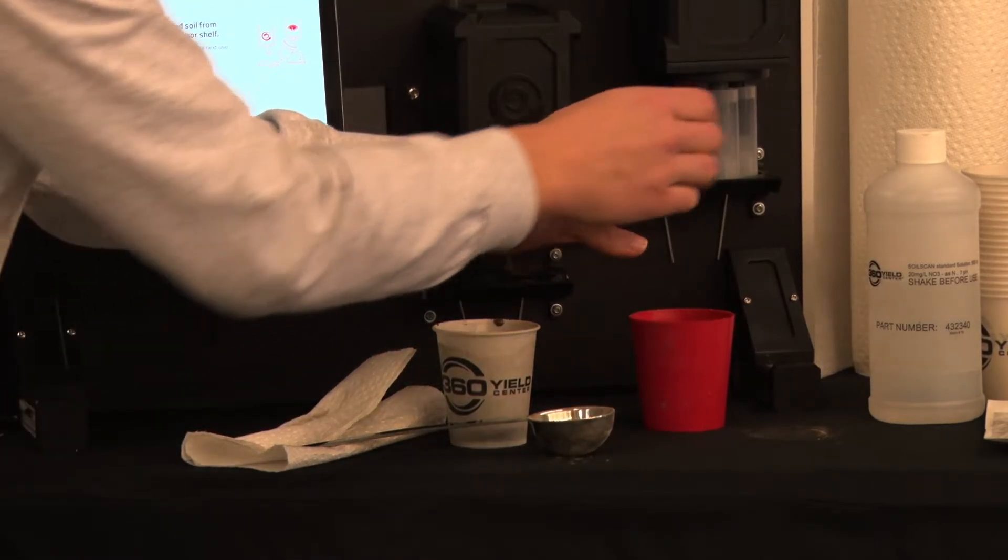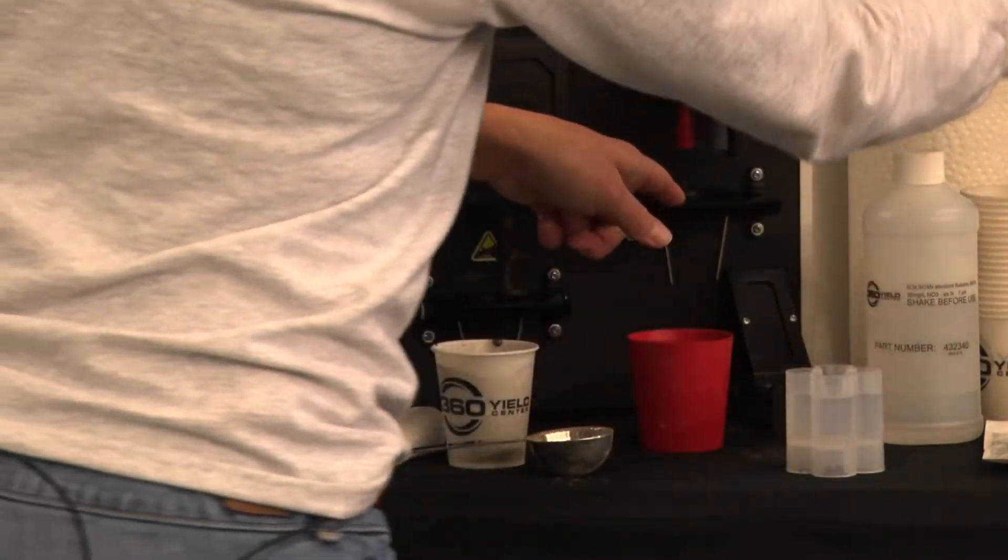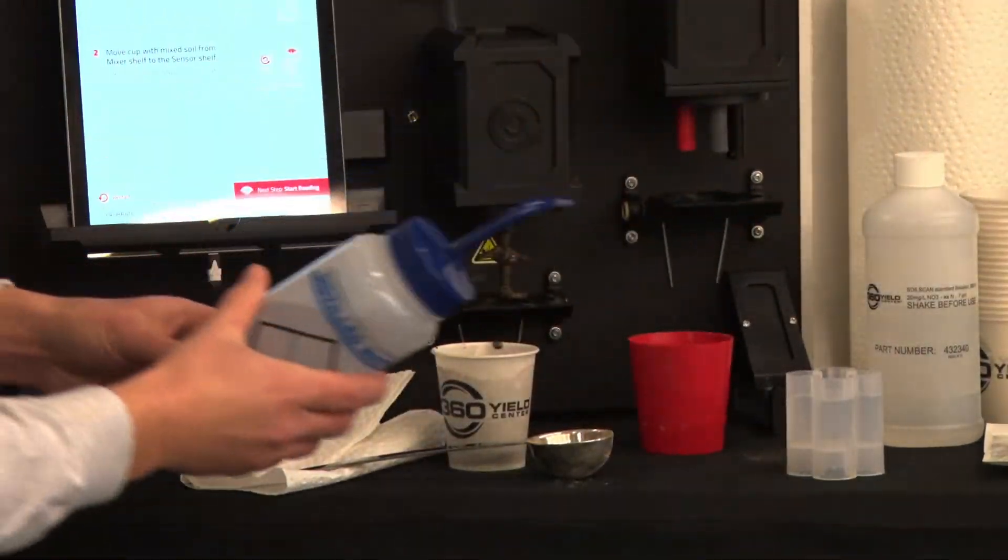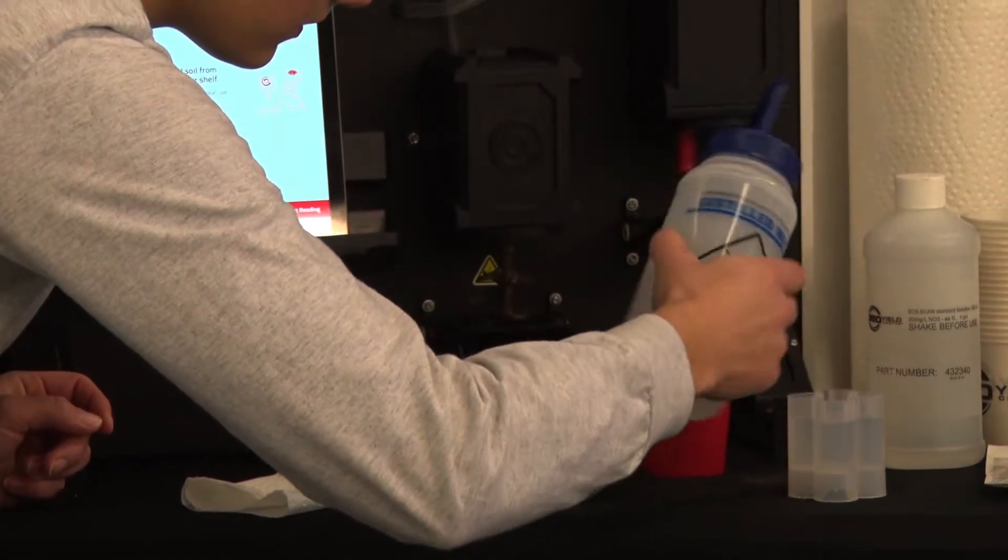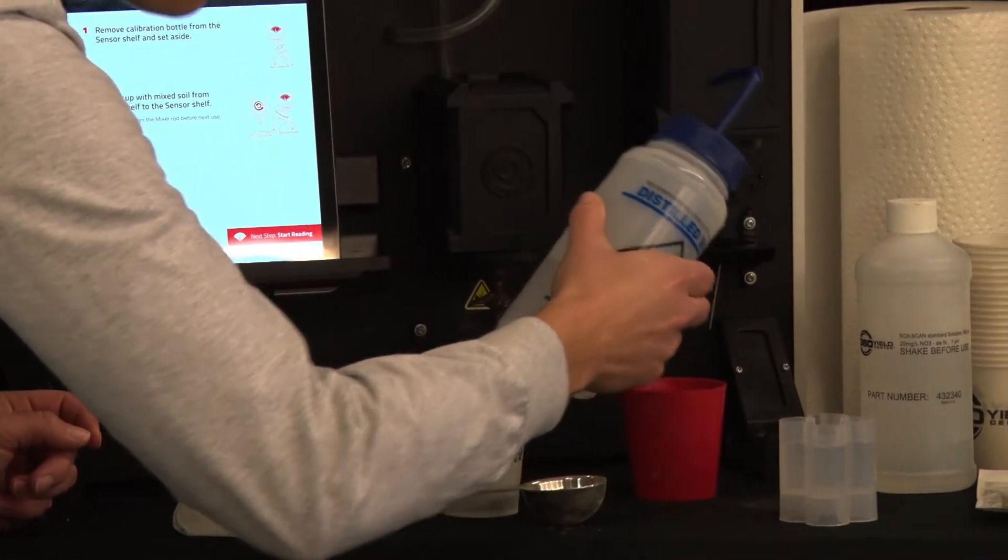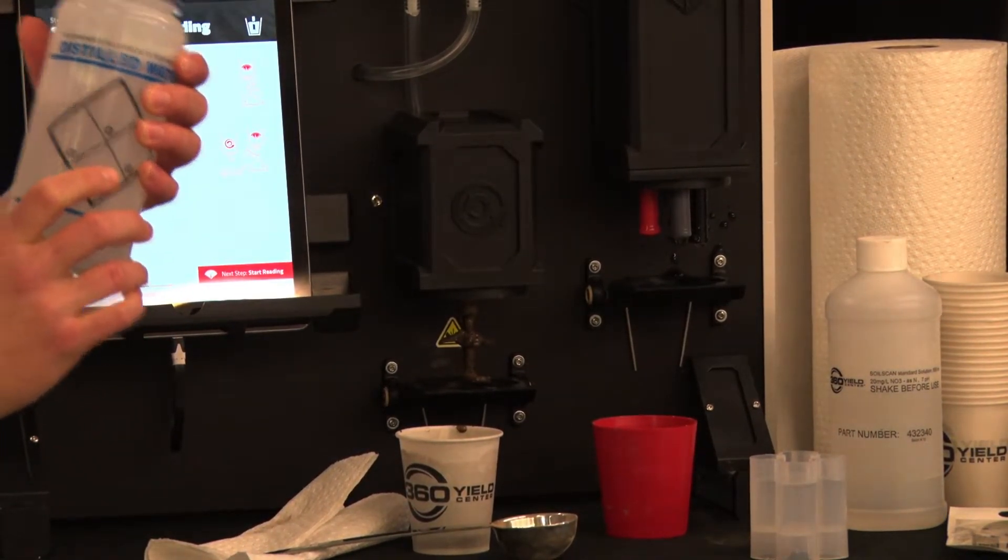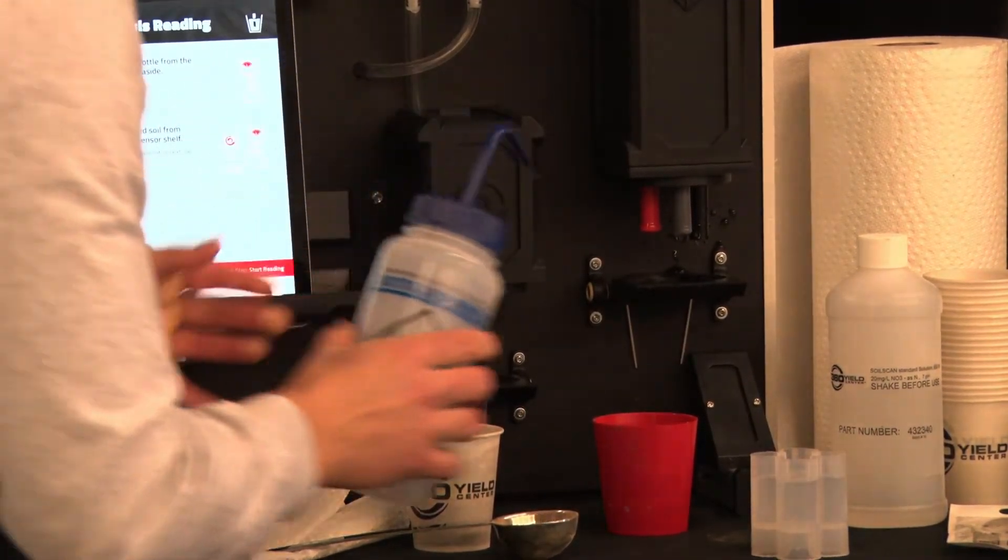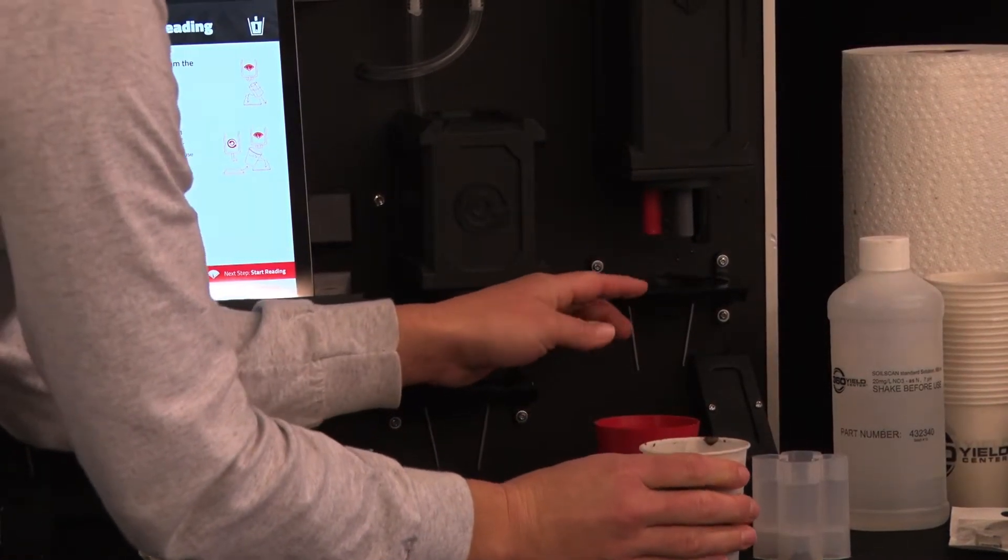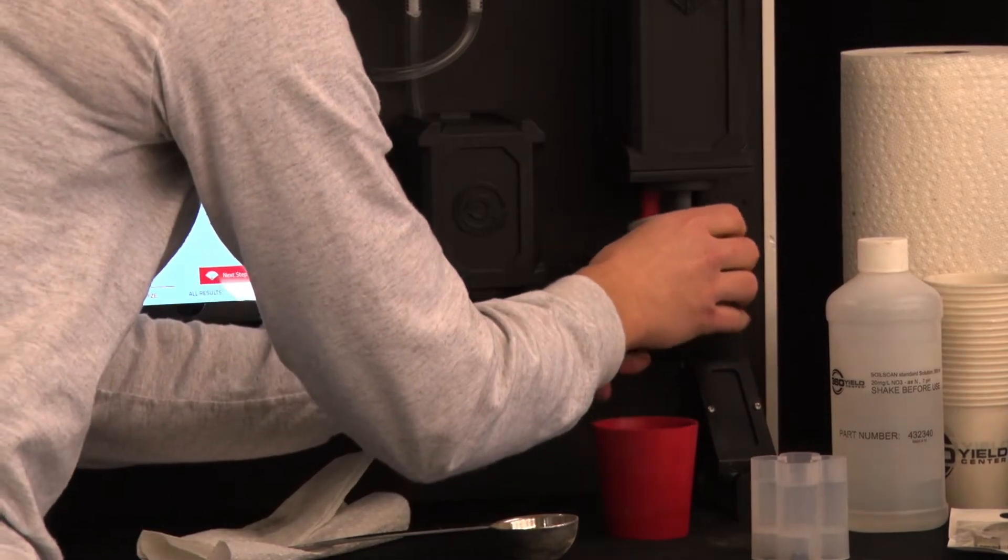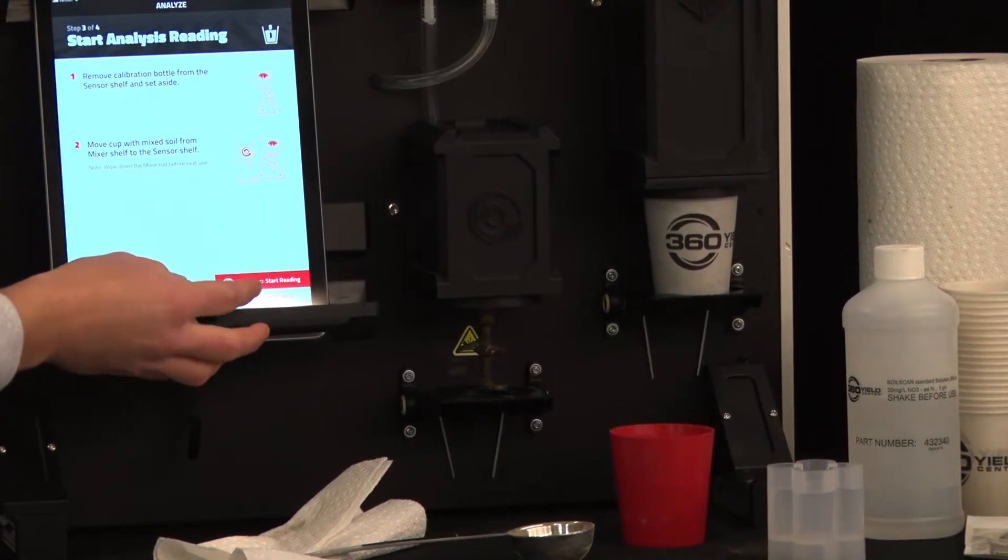Next you'll remove the calibration bottle. And you'll want to spray off the sensors. This is distilled water in the cleaning bottle. You only ever want to use distilled water when cleaning the sensors. After rinsing the sensors off with the distilled water you'll put your slurry mix underneath the sensors. And select start reading.